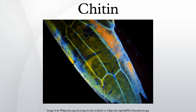In butterfly wing scales, chitin is often organized into stacks of nano-layers or nano-sticks made of chitin nanocrystals that produce various iridescent colors by thin film interference. Similar, analogous structures made of keratin are found in iridescent bird plumage.